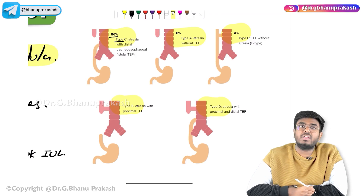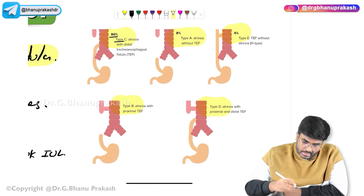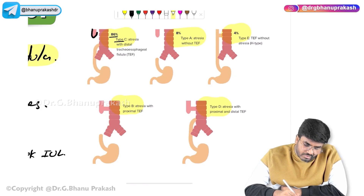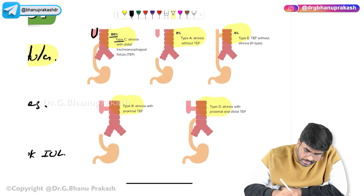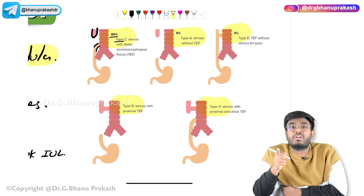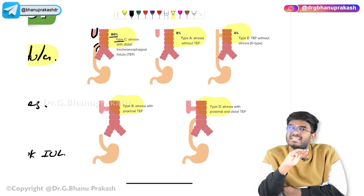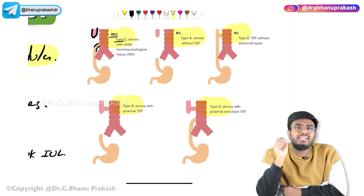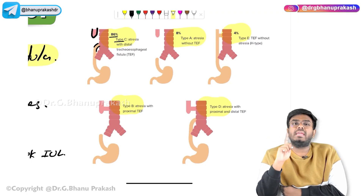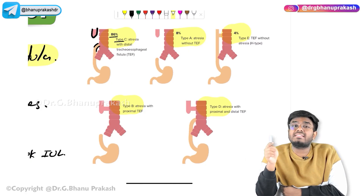In Type C, please appreciate that this is the proximal end of the esophagus and this is the distal end. The proximal esophagus has undergone atresia — it is like a stump, there is a block — but the distal esophagus is the one which has the fistula. So in Type C, proximal is blind-ended and the distal part has the fistula.